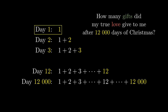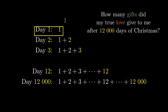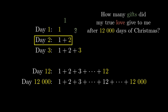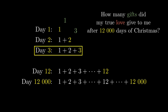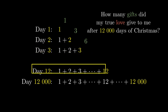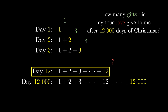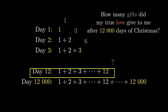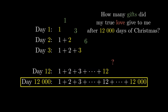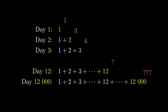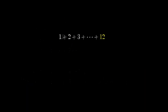On the first day of Christmas, I get 1 gift. On the second day of Christmas, I get 3 gifts. On the third day of Christmas, I get 6 gifts. But it's not obvious how many gifts I got on the 12th day, and even less obvious how many I got on the 12,000th day. Let's calculate the number of gifts that my true love gave to me on the 12th day.